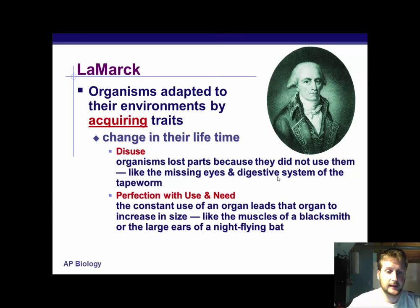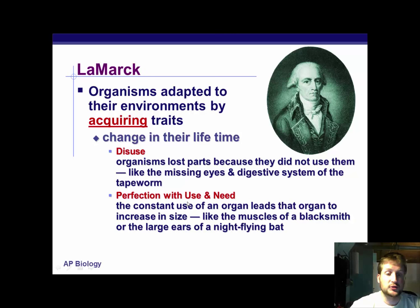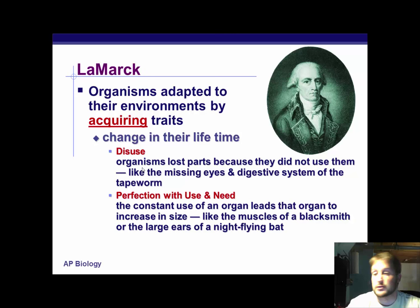Perfection with use and need: the constant use of an organ leads to that organ increasing in size, like the muscles of a blacksmith or the larger ears of a night-flying bat. We do have examples of where this actually does work — if you picture some tribes in Africa that stretch out their neck by putting rings on there. Lamarck is talking about how bodies can change per our own need. What he's more talking about is, say, a whole bunch of giraffes are out in the field — if all the food is extremely high, the giraffes are going to keep stretching their necks. That's what he's saying there. Another good example is cave fish — they have their eye sockets but not their eyes, because they no longer need them for sunlight.